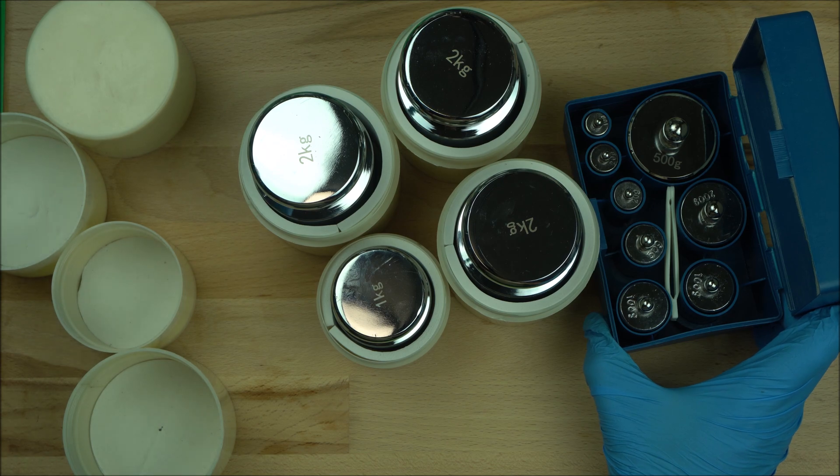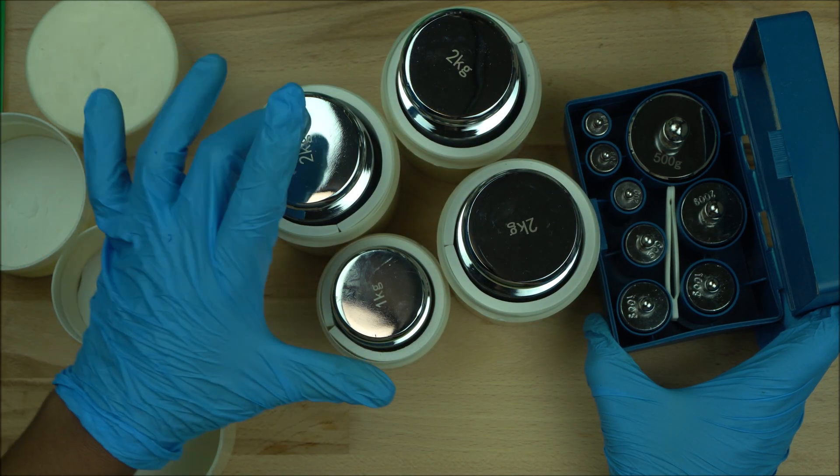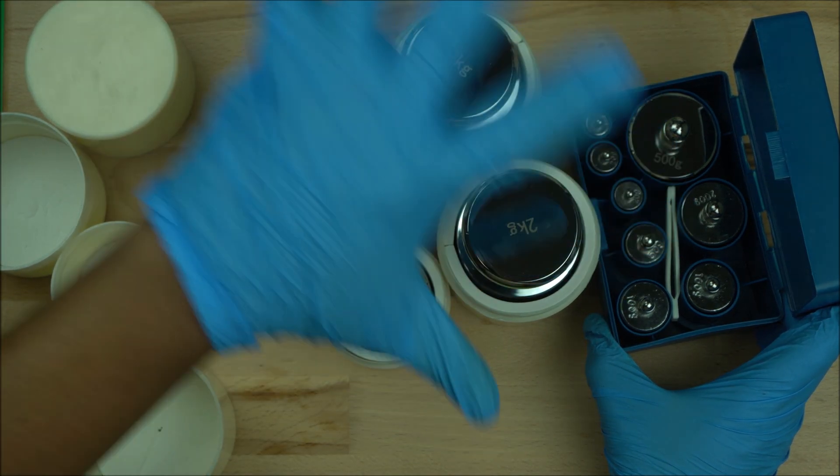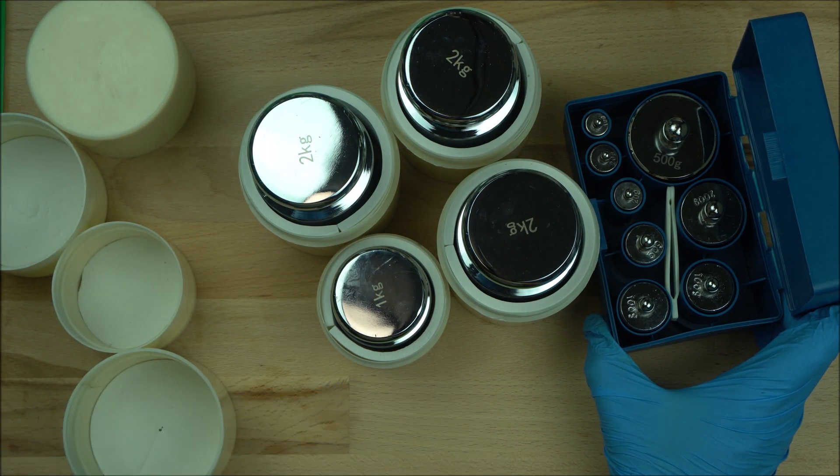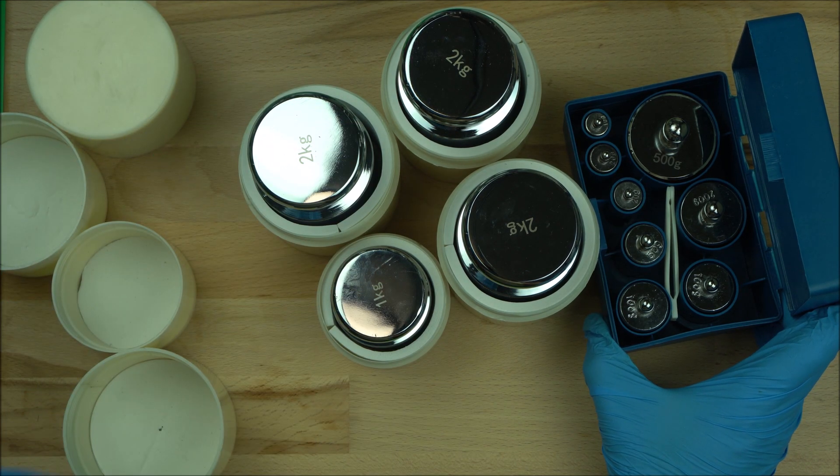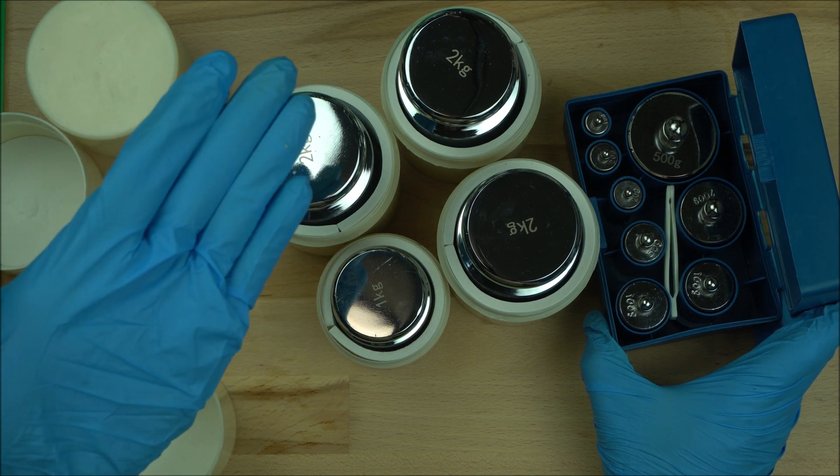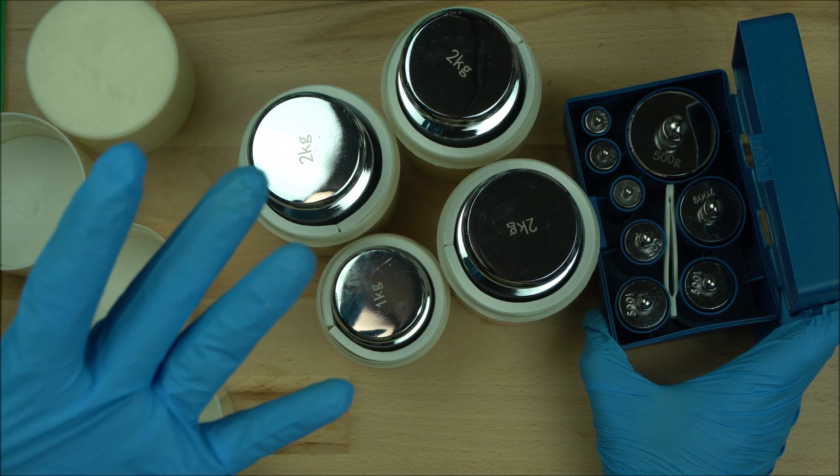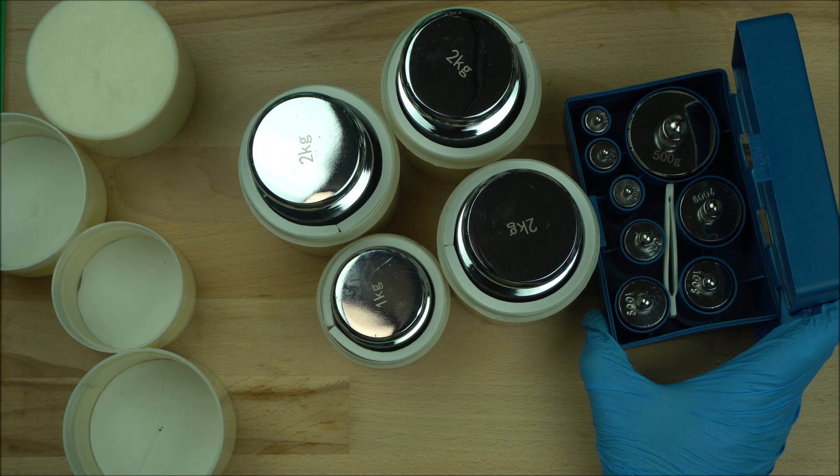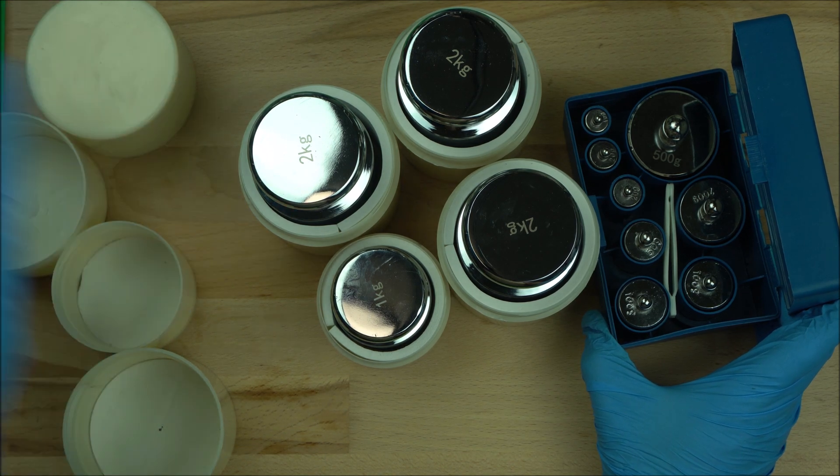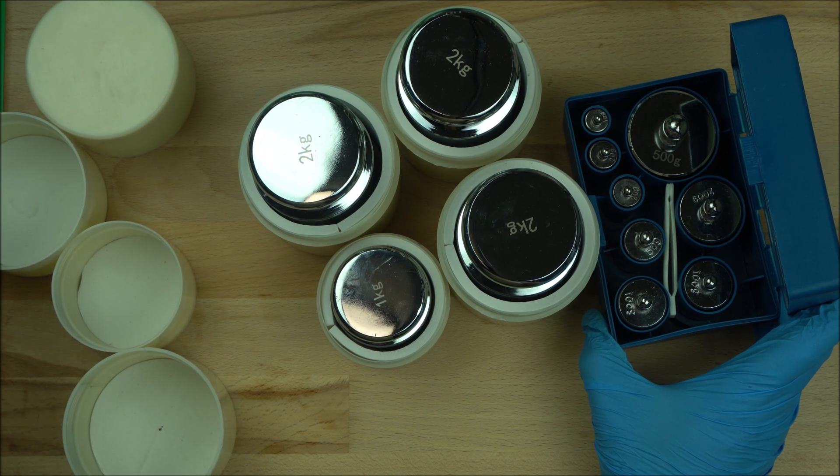If you have a bigger lab scale, like Ohaus and other ones, you can go for the smaller sizes. By the time you compile everything together, you're going to get the amount of calibration scale that you need to calibrate your scale—calibration weight I mean—to calibrate your scale.